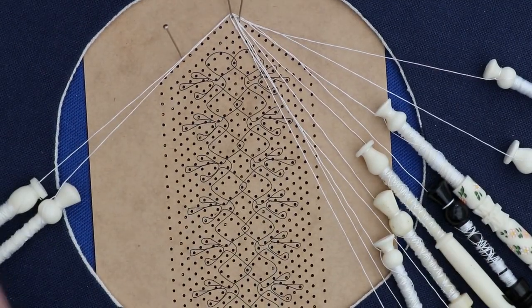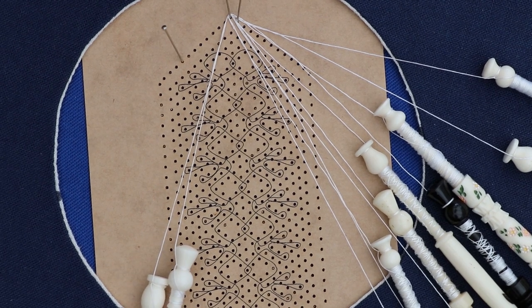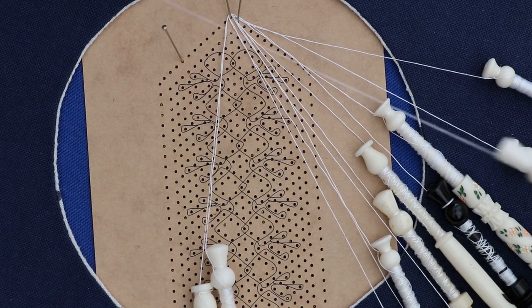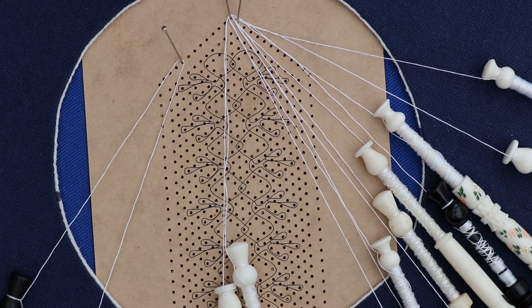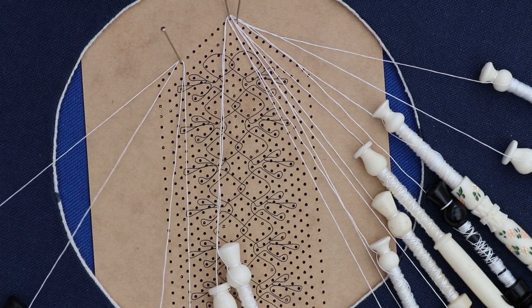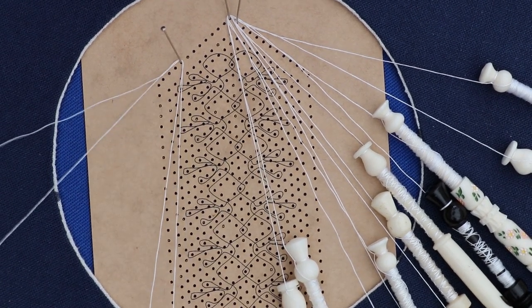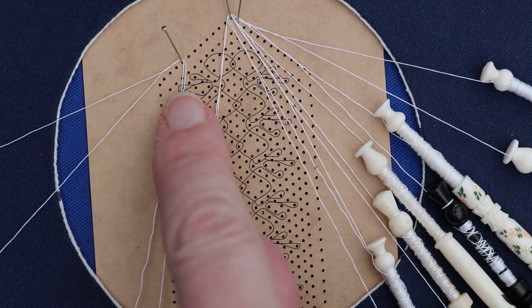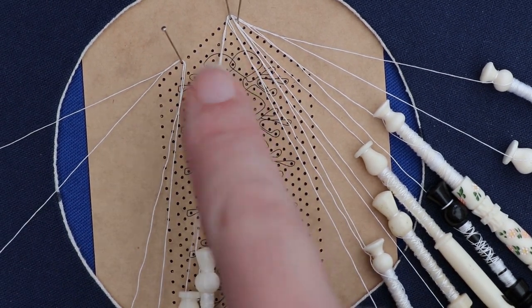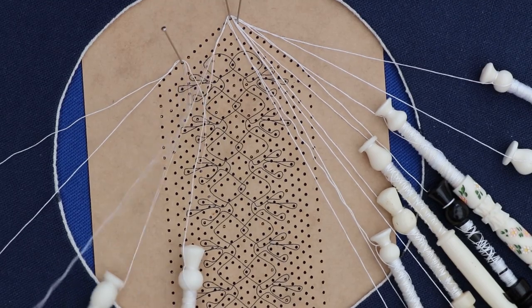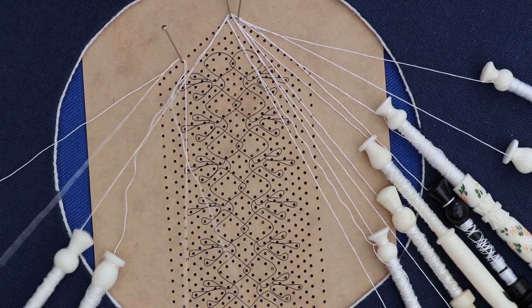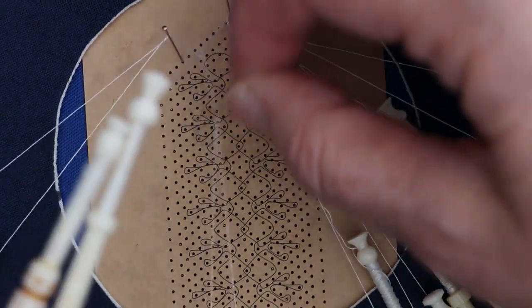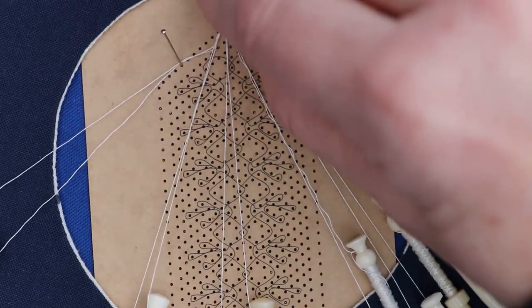Do the same on the left as I've just done on the right. Hang two pairs on the temporary support pin, put two twists on, and cloth stitch the inside one with the edge one that is already sitting there. Put two twists on and the pin up between the two you've just worked with.